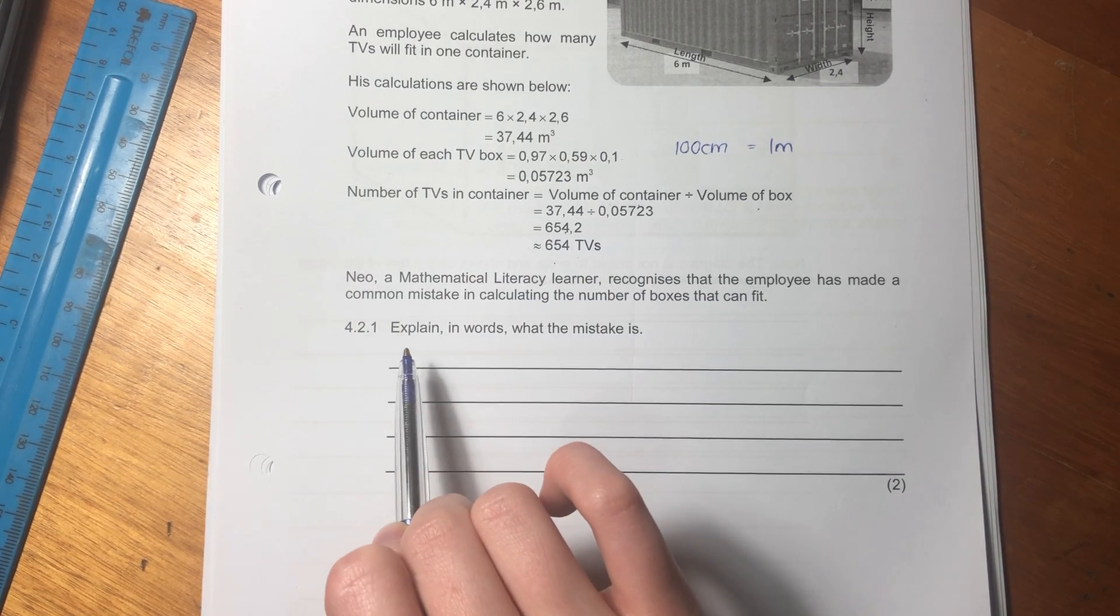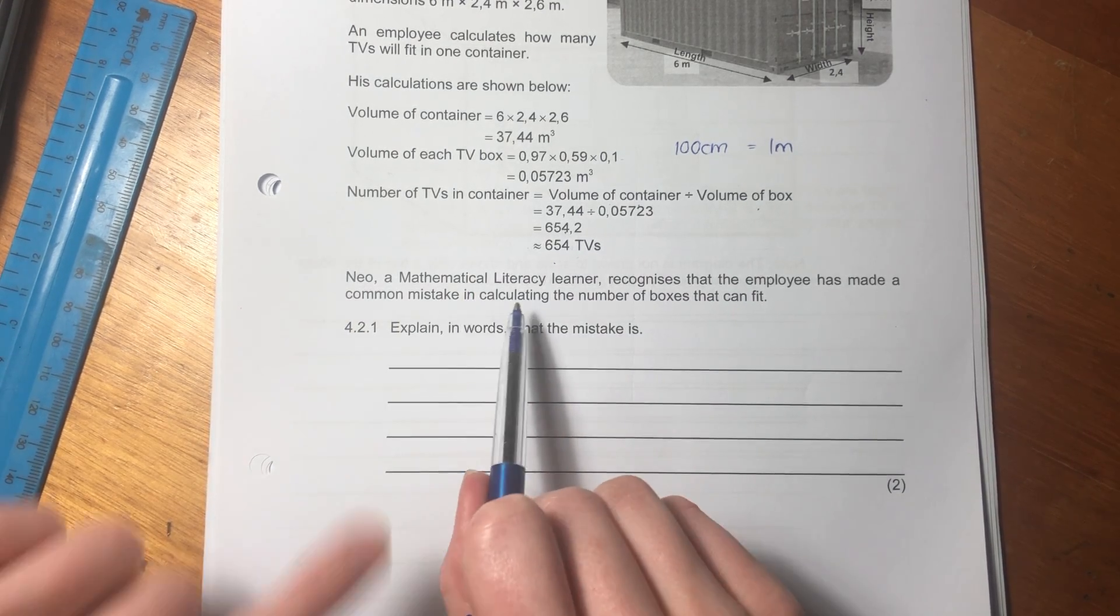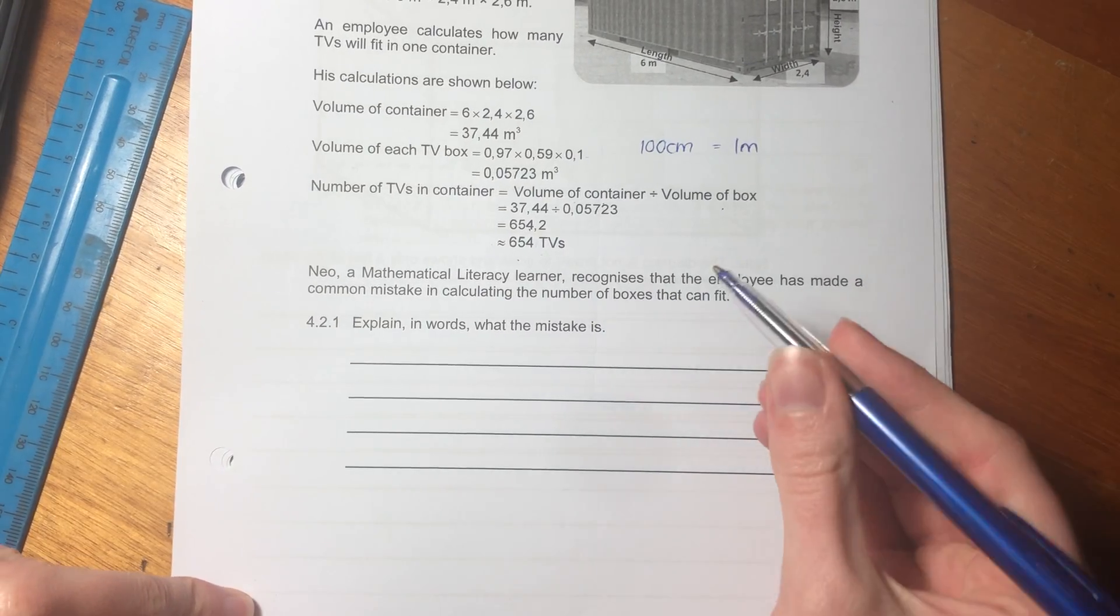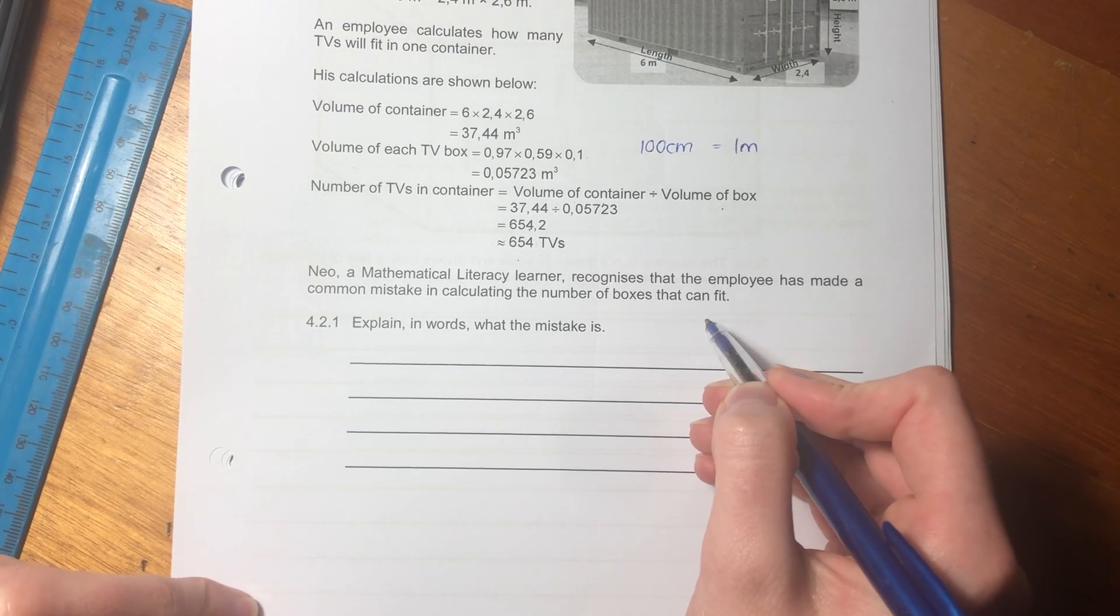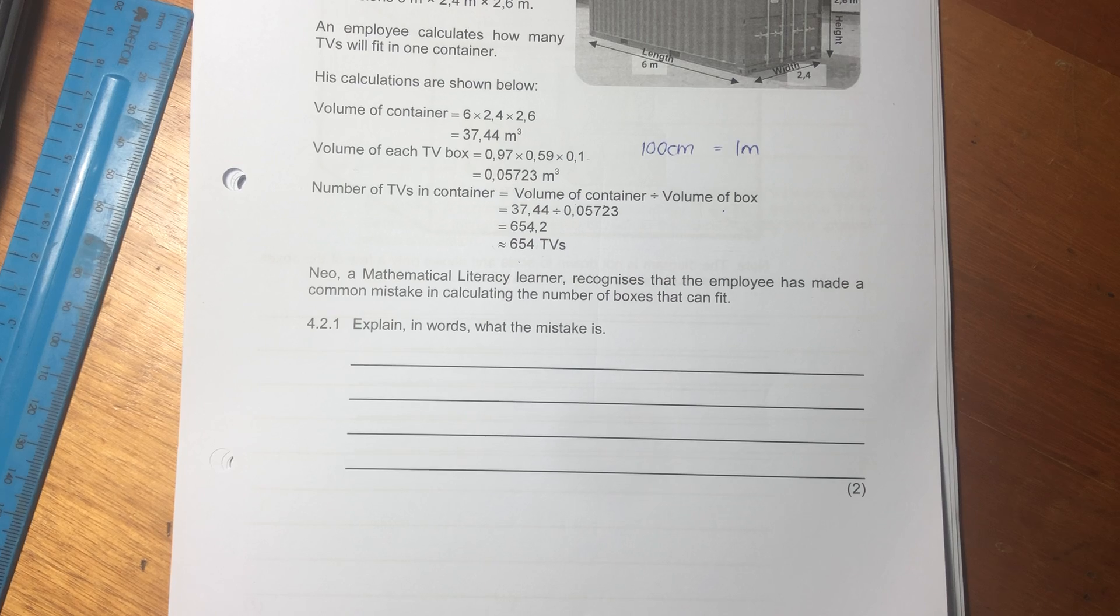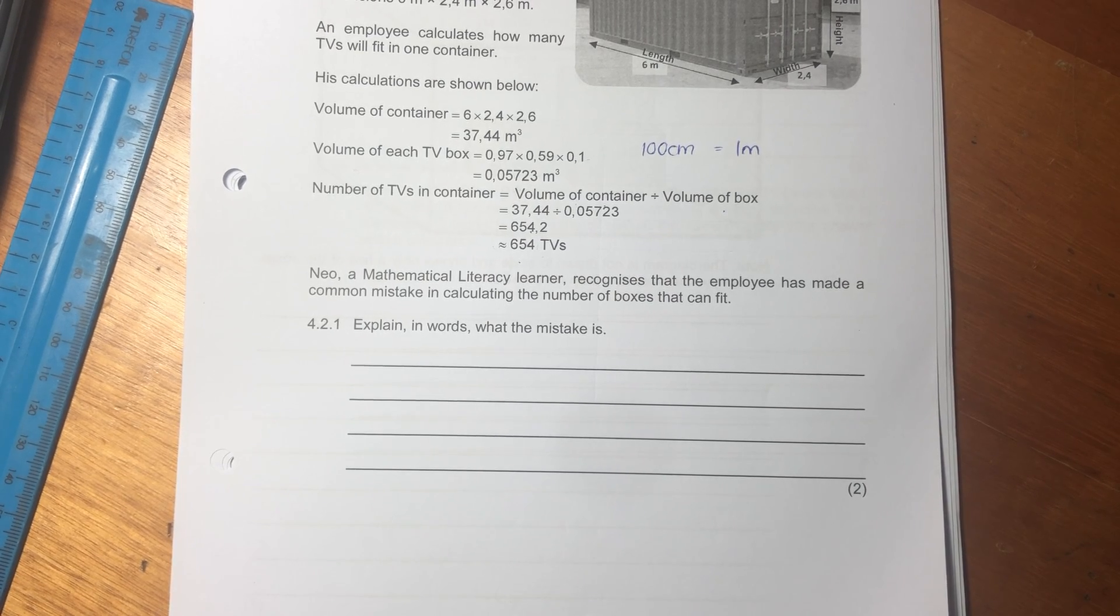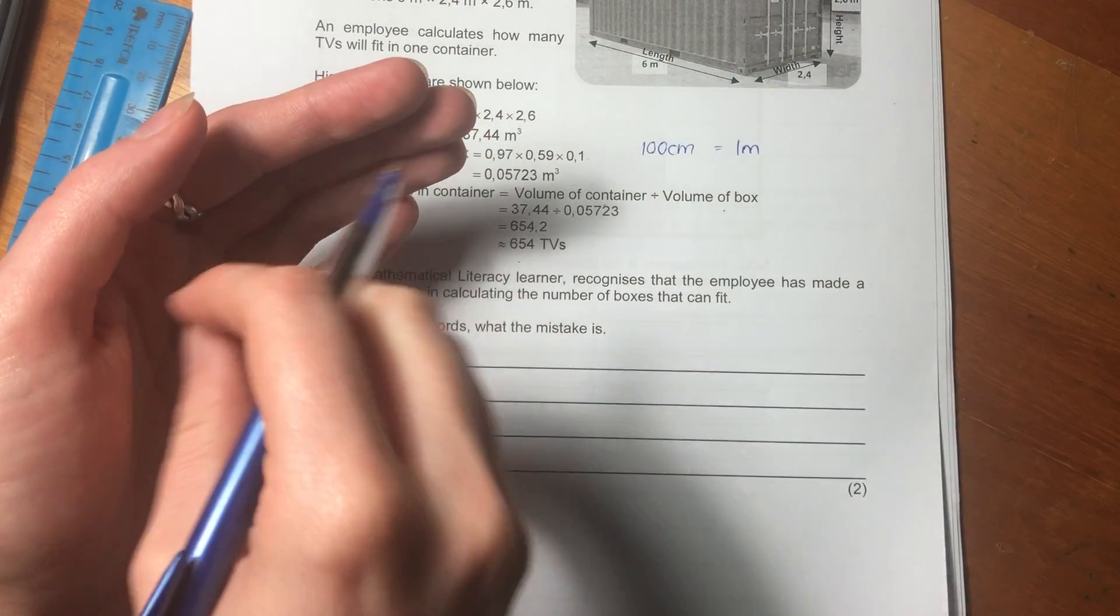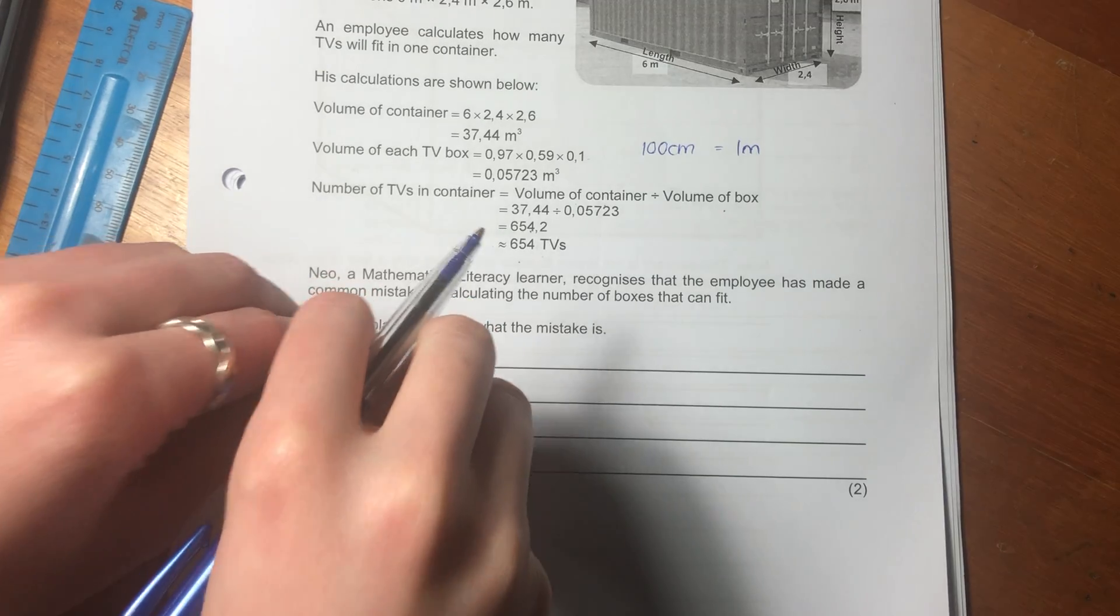So let's get into the question that they want us to look at here. So it says Neo, a mathematical literacy learner, recognizes that the employee has made a common mistake in calculating the number of boxes that can fit. Explain in words what the mistake is.